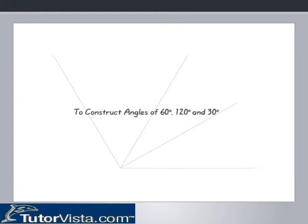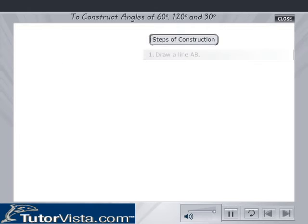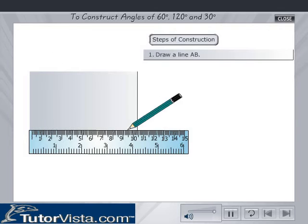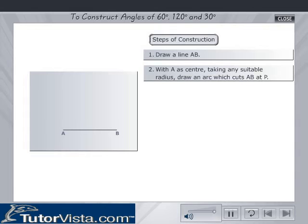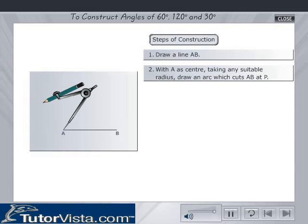To construct angles of 60 degrees, 120 degrees, and 30 degrees, draw a line AB. With A as center, taking any suitable radius, draw an arc which cuts AB at P.